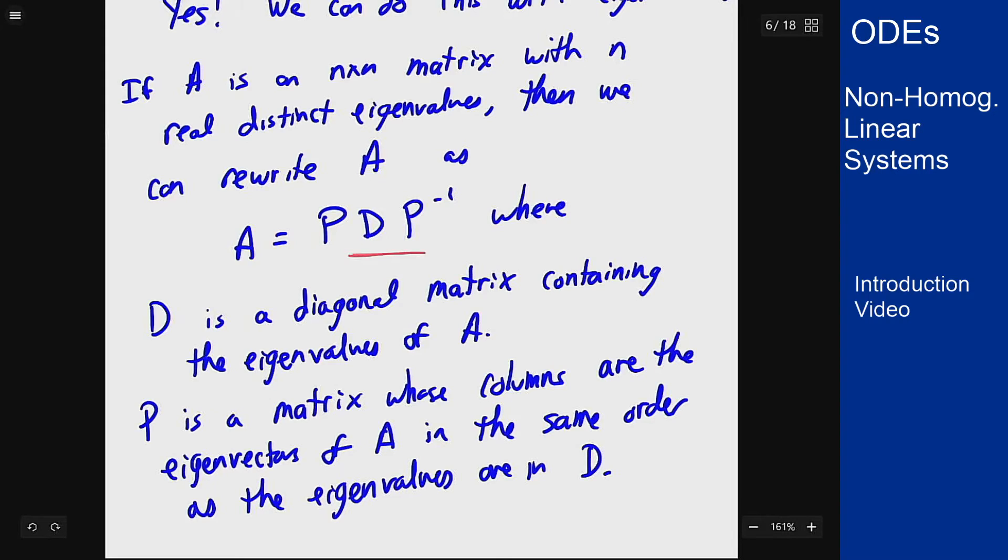If I go to this side when I apply P⁻¹ that converts the eigenvector into just a single entry corresponding to which column that eigenvector was in. D then multiplies that column by the appropriate eigenvalue and then P reconverts it into the eigenvector at the end. So I get the same process for all the eigenvectors and since I have n real distinct eigenvalues I get the basis of eigenvectors so it works everywhere.